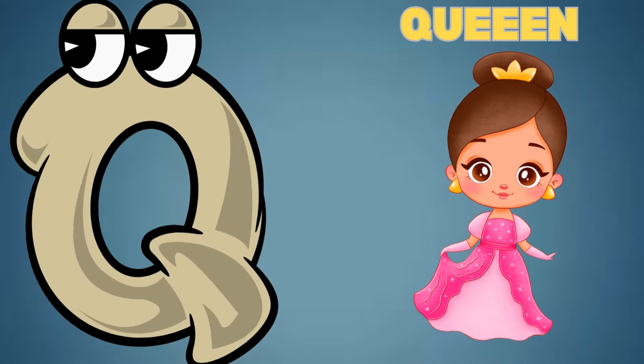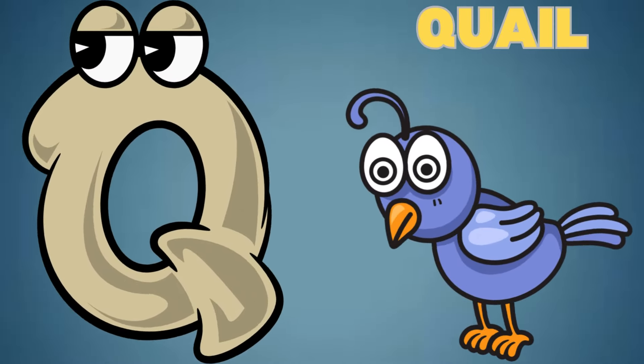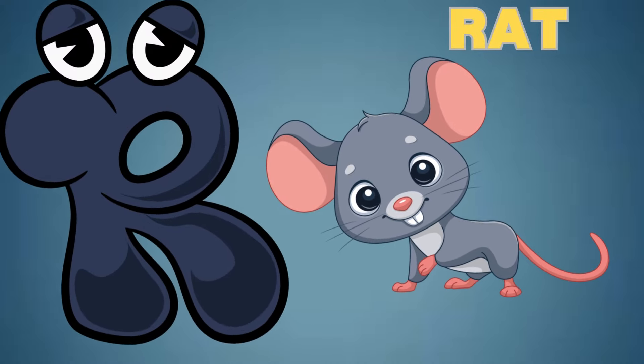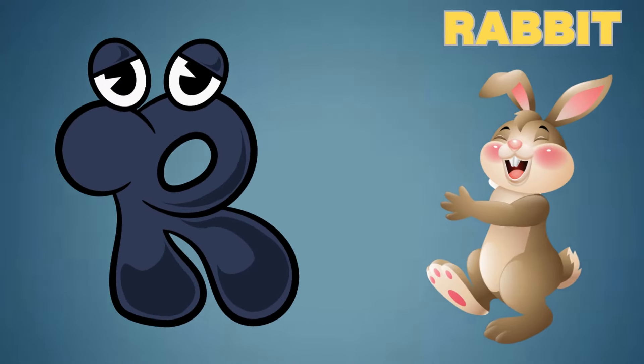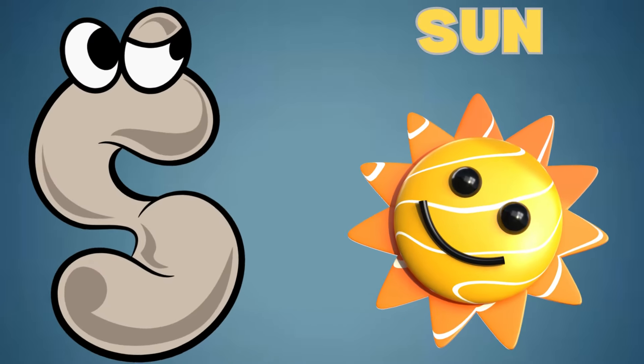Q is for Queen. Q is for Quail. R is for Rat. R is for Rabbit.